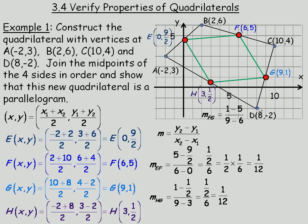Now the last two sides. So FG is over here. So we would subtract 1 minus 5 over 9 minus 6. And so 1 minus 5 is -4. 9 minus 6 is 3. So FG has a slope of -4/3.